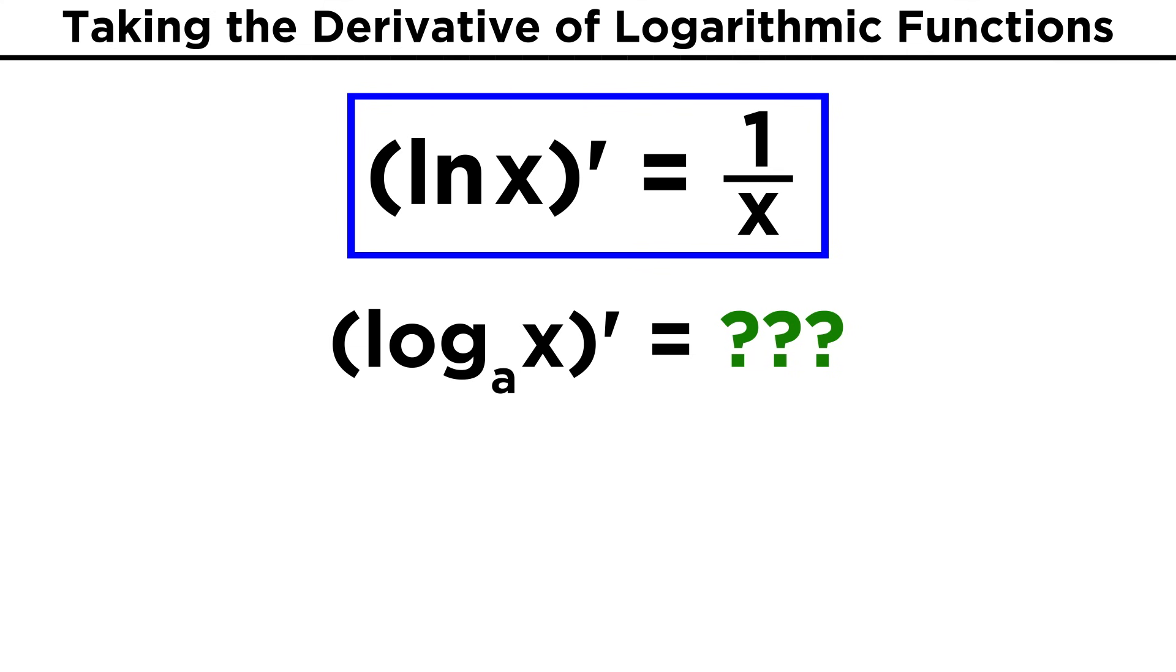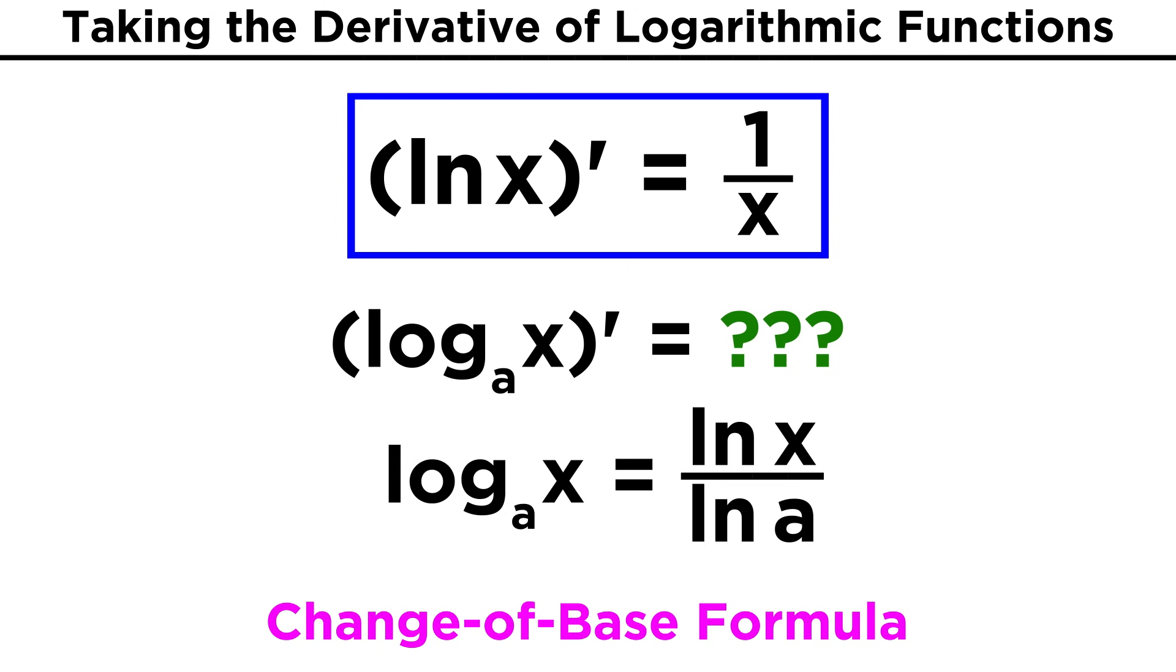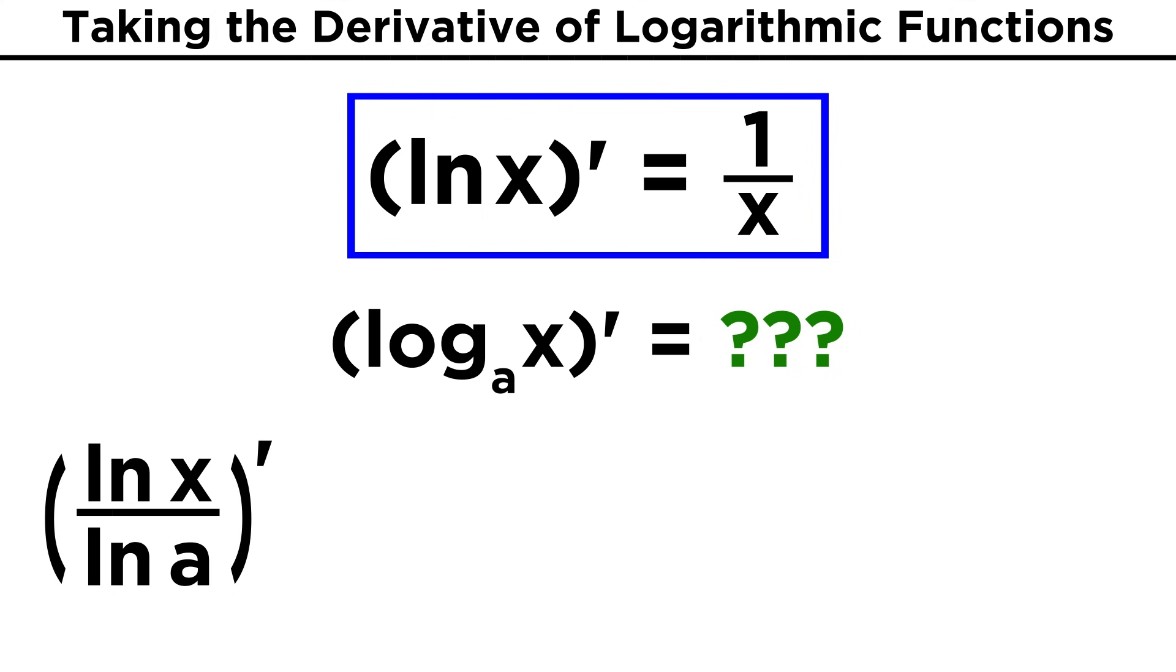From this, we can also know the derivative of the log of X with some base A. As we know from the change of base formula, this can be expressed as the natural log of X over the natural log of A. And this will be easy to take the derivative of, because one over the natural log of A is a constant, so let's pull that out.